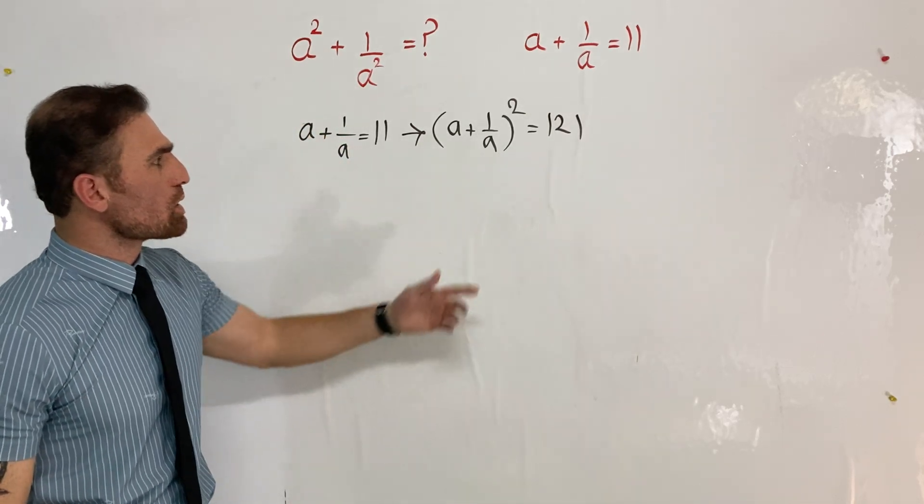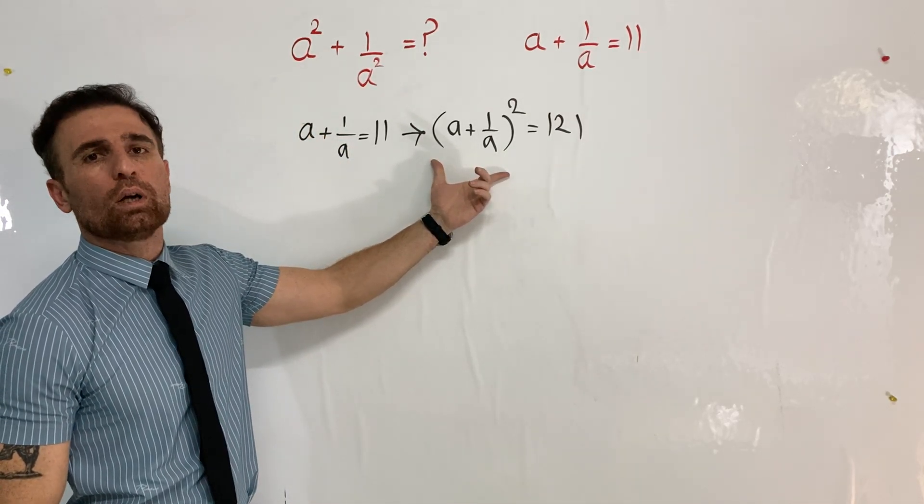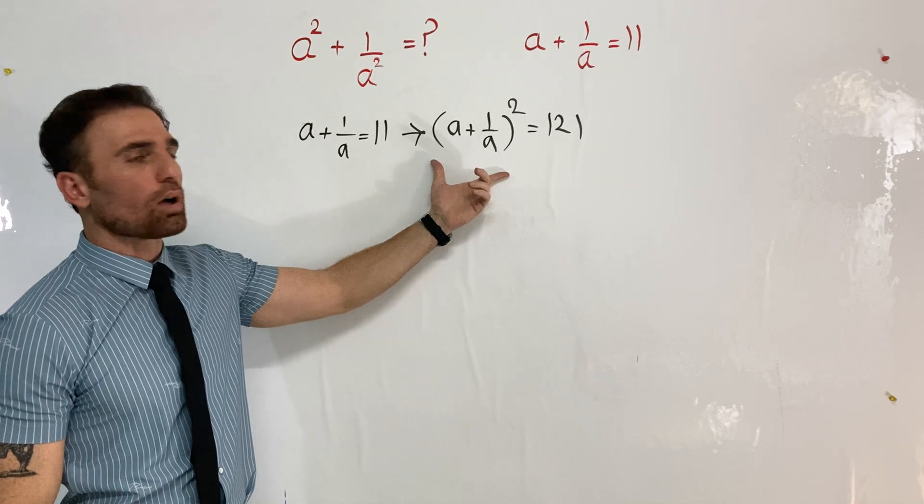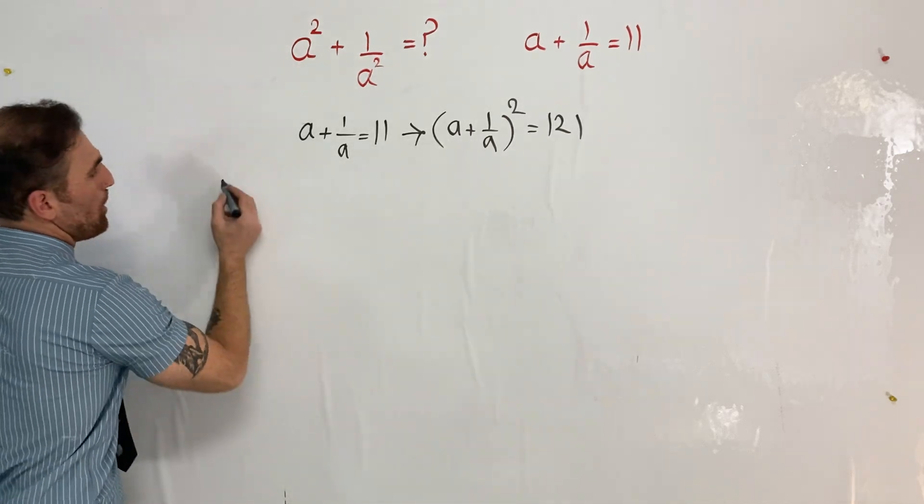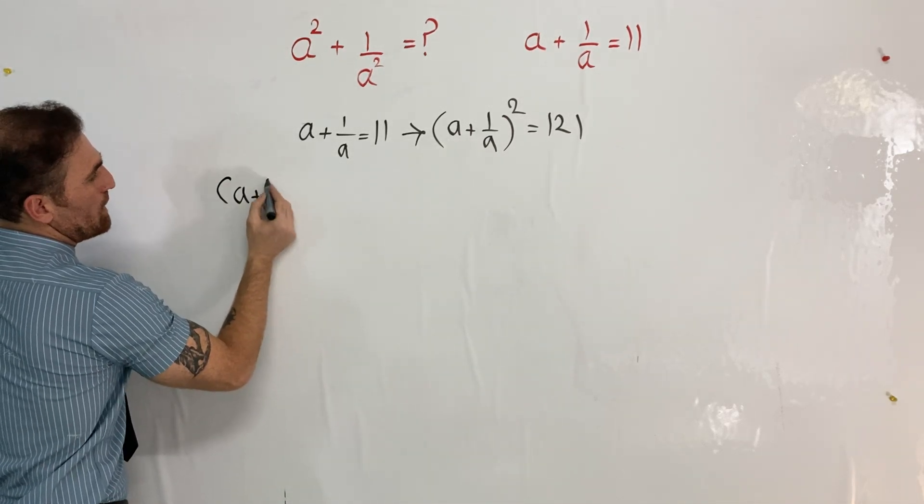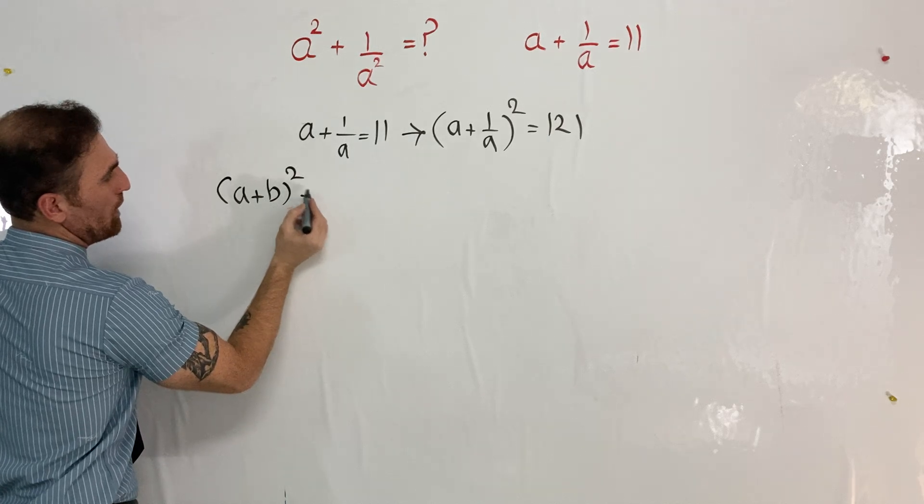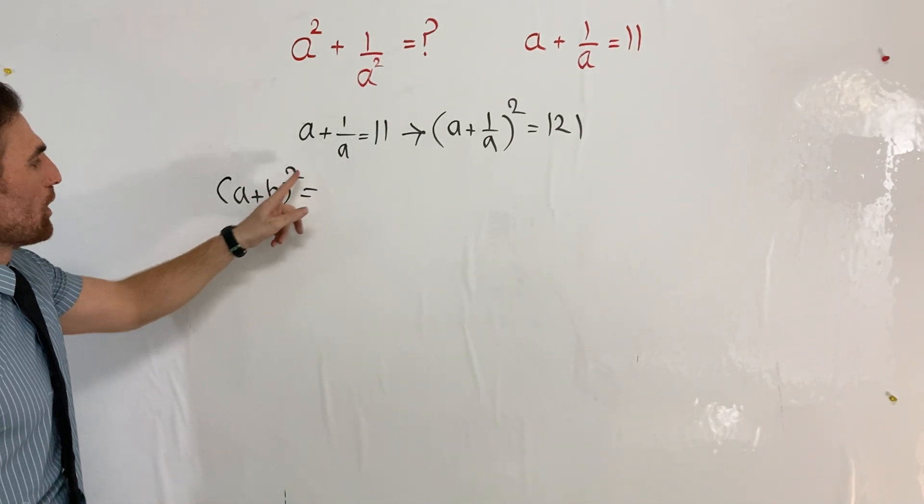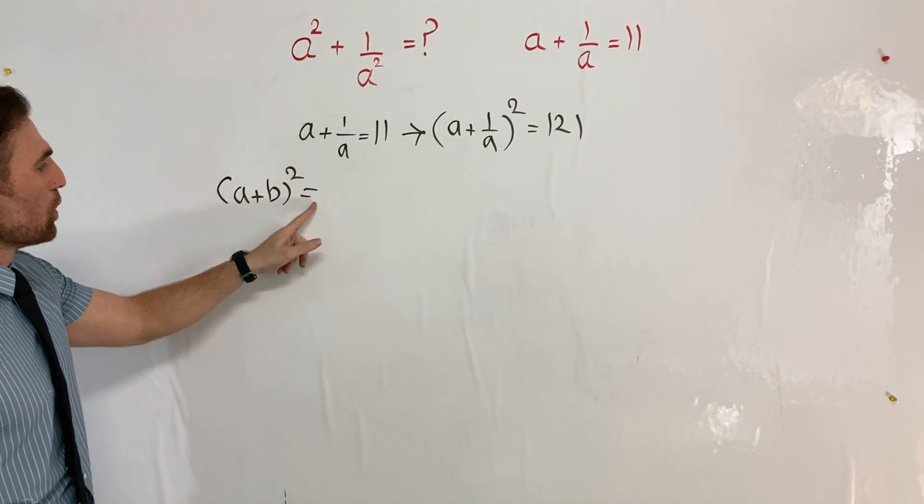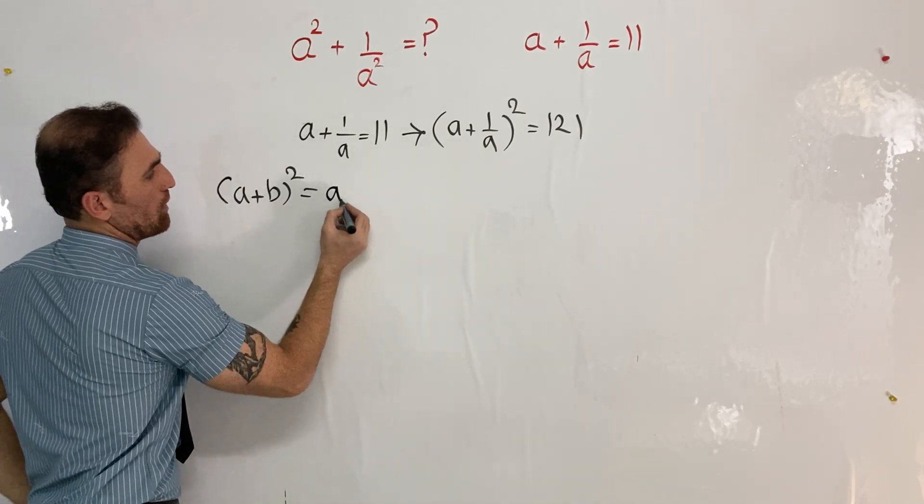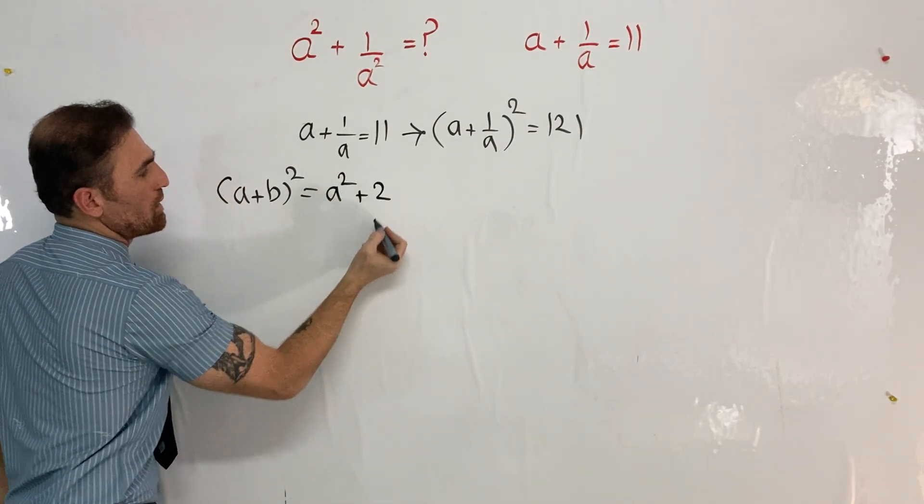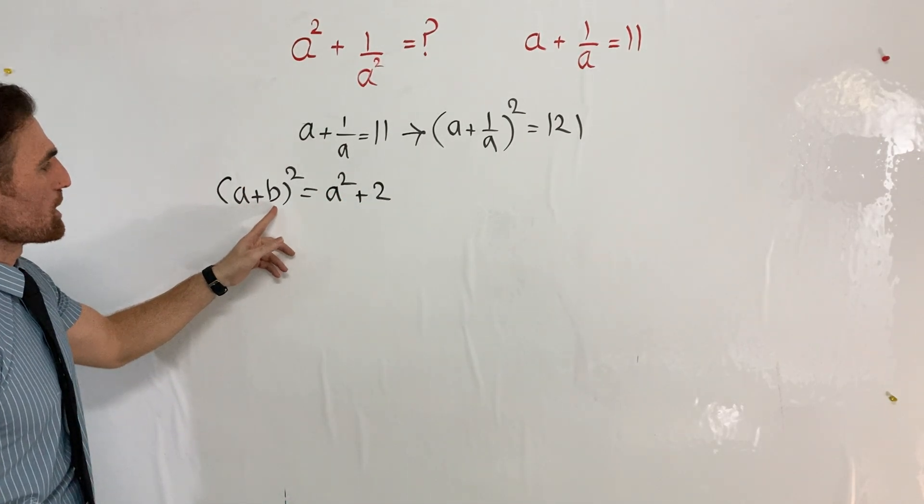What should we do to solve this? I'm going to use an algebraic identity that says (a + b)², the square of the sum of two terms, equals first term squared plus twice the product of the first term and second term plus second term squared.